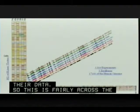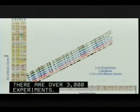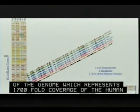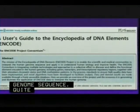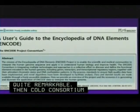In summary, there are over 3,000 experiments covering five terabases of sequence data, which represents over 1,700-fold coverage of the human genome sequence — quite remarkable. The ENCODE consortium recently published a user's guide to ENCODE, published last month in PLOS Biology, in recognition of the vast amount of data being generated and the goal of making it as useful to the community as possible.